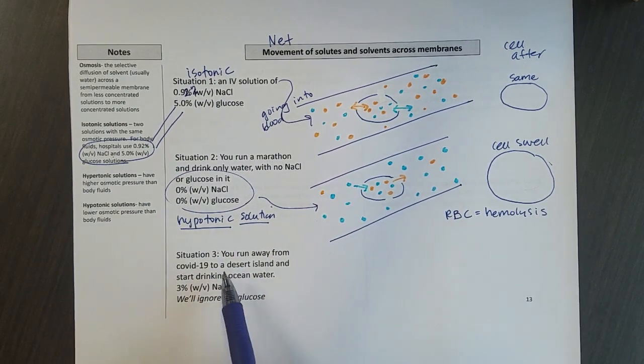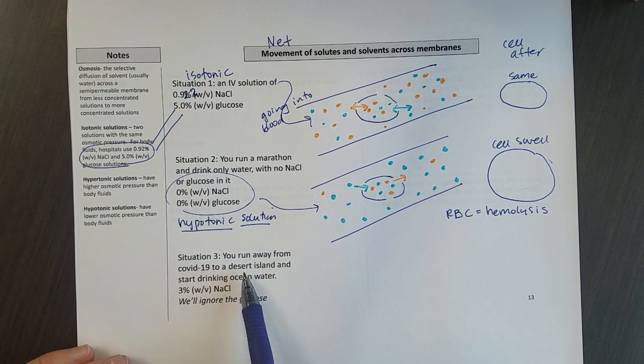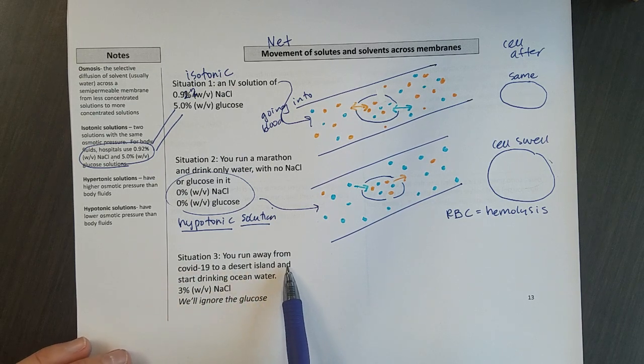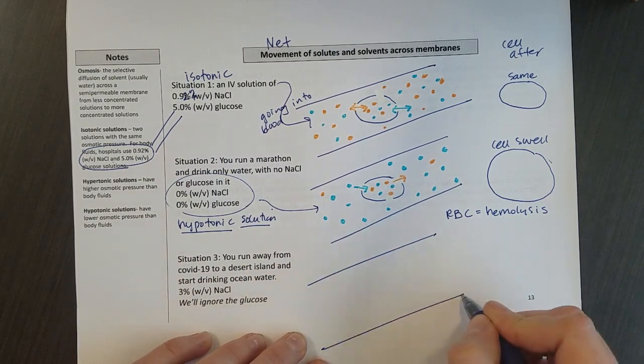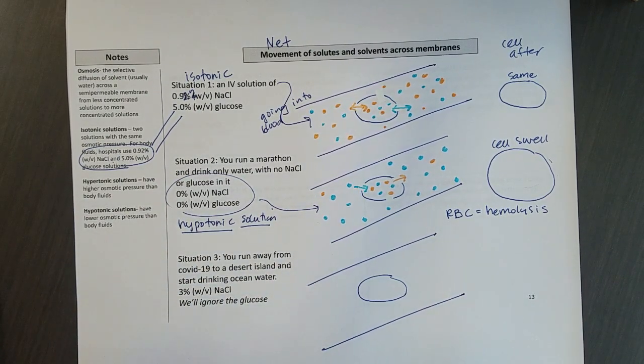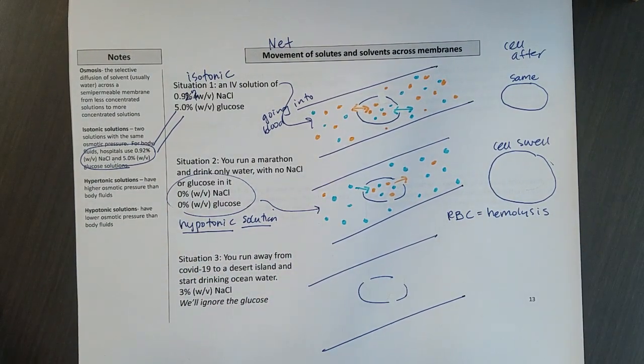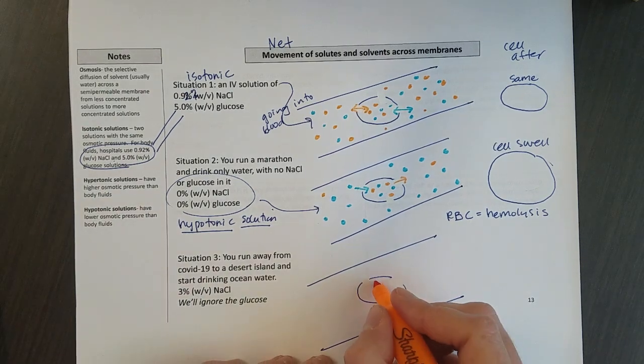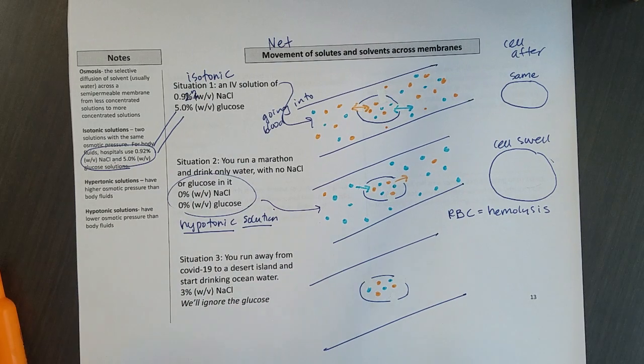So the final scenario we're going to look at is this year we have COVID-19 running rampant in the world. So to try and get away from that, you go to a desert island, you forget water, so you start drinking ocean water. So we know that's a bad decision, but let's look at why. So here's my cell. It's got some holes to allow some things in and out. Inside my cell, standard solution, some solute, some solvent.